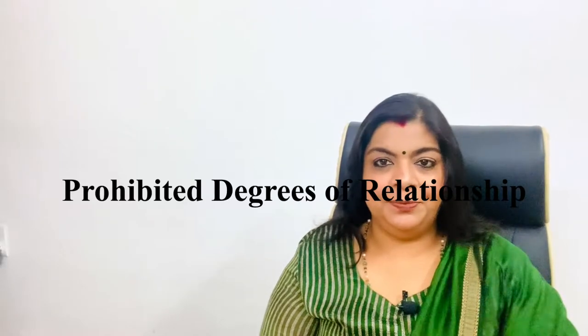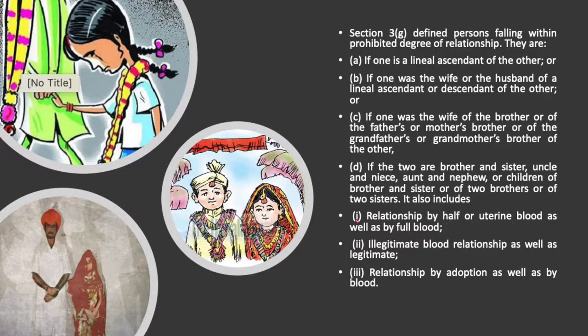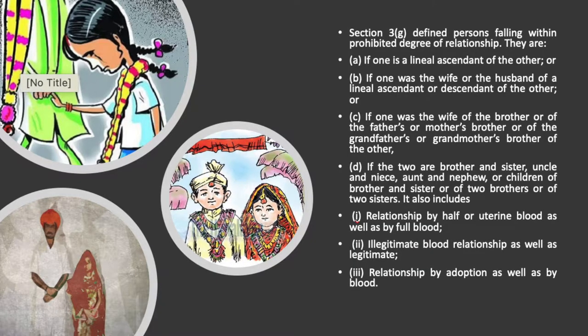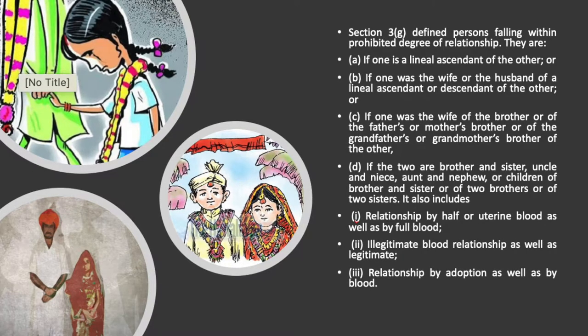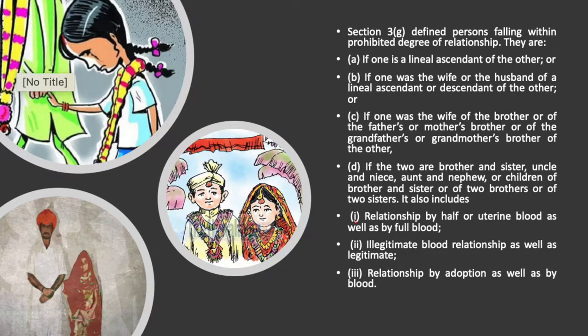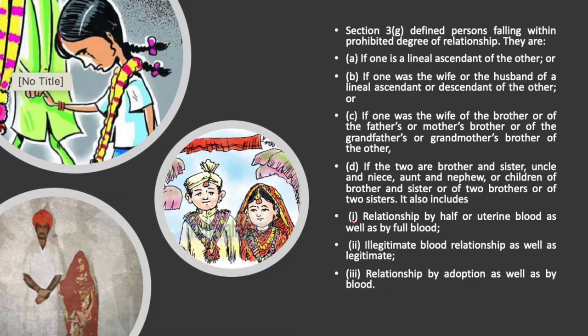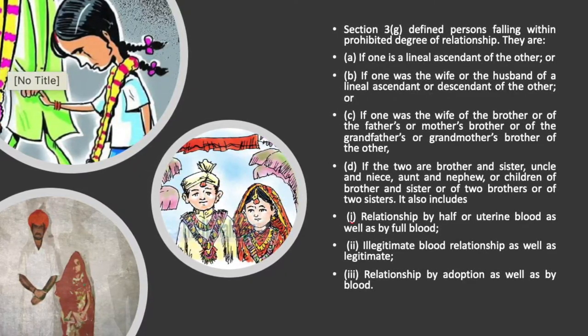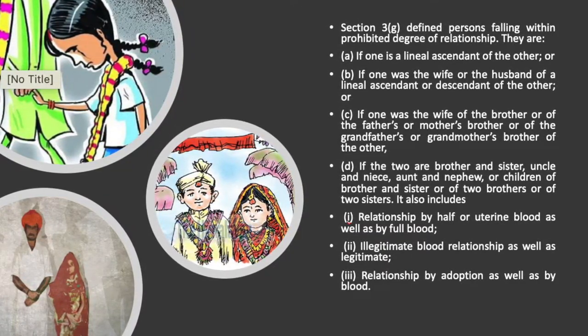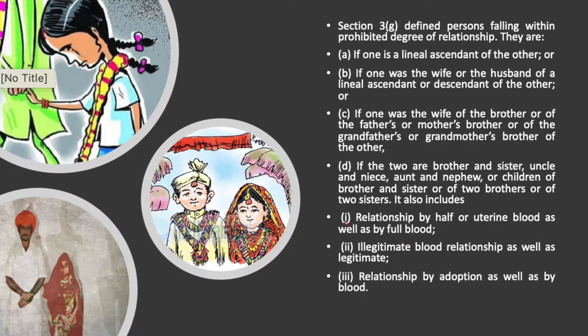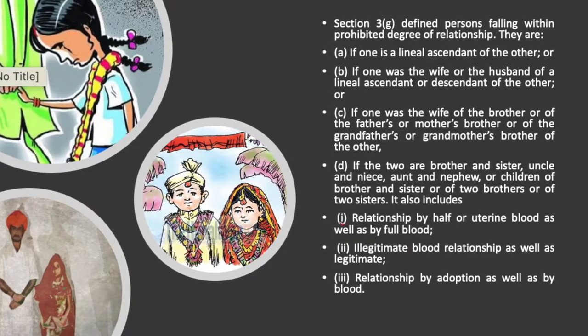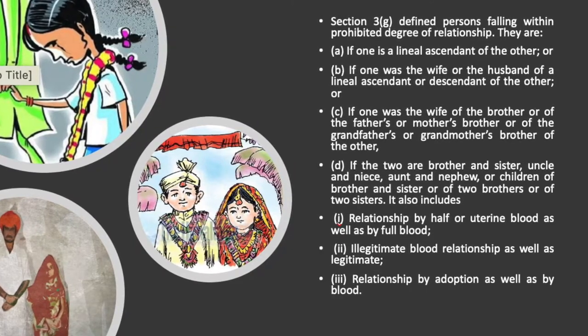The fourth essential is prohibited degree of relationship. This means there are certain relationships in which marriage is prohibited under Hindu law, as these relationships are considered very close. Section 3(g) defines persons falling within prohibited degree of relationship. First, if one is a lineal ascendant of the other — meaning direct blood relationship — those persons cannot marry. Second, if one was the wife or husband of a lineal ascendant or descendant of the other, meaning no one can marry another's wife or husband whether from the ascendant or descendant side.